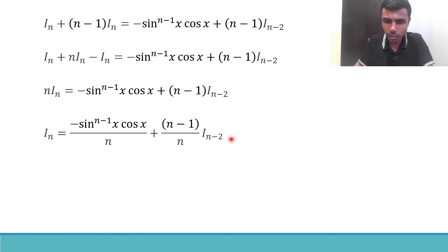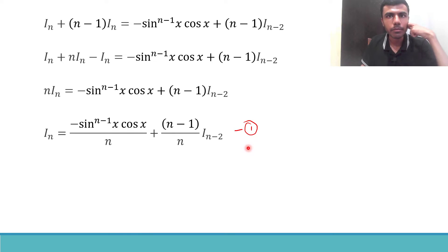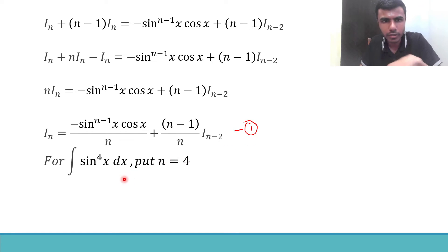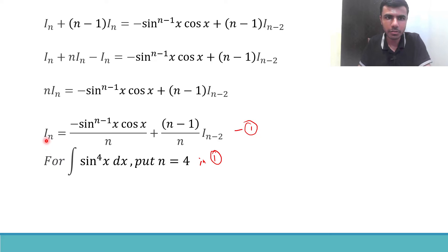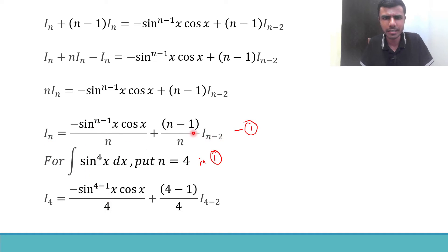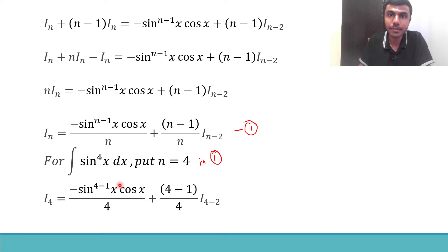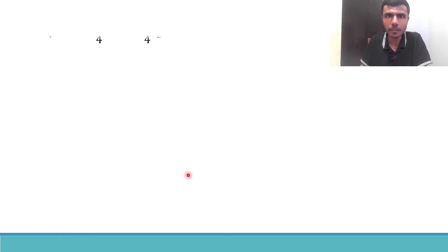Now we also need to find integral sin^4 x dx, i.e., I_4. In the reduction formula, put n = 4: I_4 = −sin^3 x·cos x / 4 + (3/4)·I_2. Simplifying: I_4 = −sin³x·cos x / 4 + (3/4)·I_2, where 4−1 = 3 and 4−2 = 2.